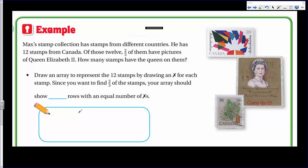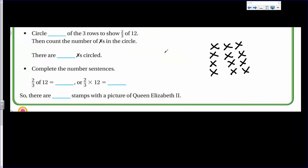Draw an array to represent the 12 stamps by drawing an X for each stamp. Since you want to find two thirds of the stamps, your array should show blank rows with an equal number of X's. So I'll get my pen and we'll do some X's across here. We should have three going across if we're going to do it like we did with the last one. So we have three, and I'm trying to get a total of 12. Right now I have three times three, which is nine. Now if I do one more three, I have three times four. I have 12. Your array should show blank rows. It should have four, four rows with an equal number of X's.